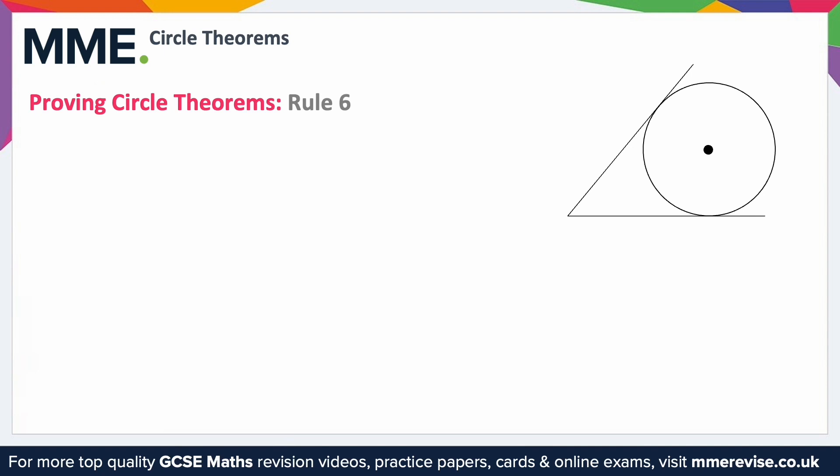For example, here we can prove Rule 6 by constructing triangles where the two tangents meet the circle. We can create a base of a right angle triangle. What I mean by that is if I join the center of this circle to where the tangents meet the circle like this, then split them down the middle to make two triangles from this point to this point like this.